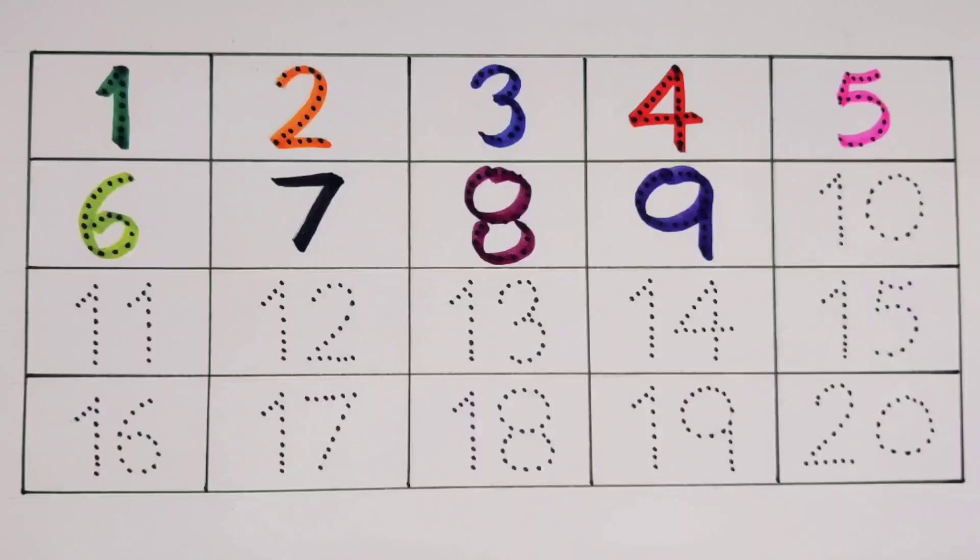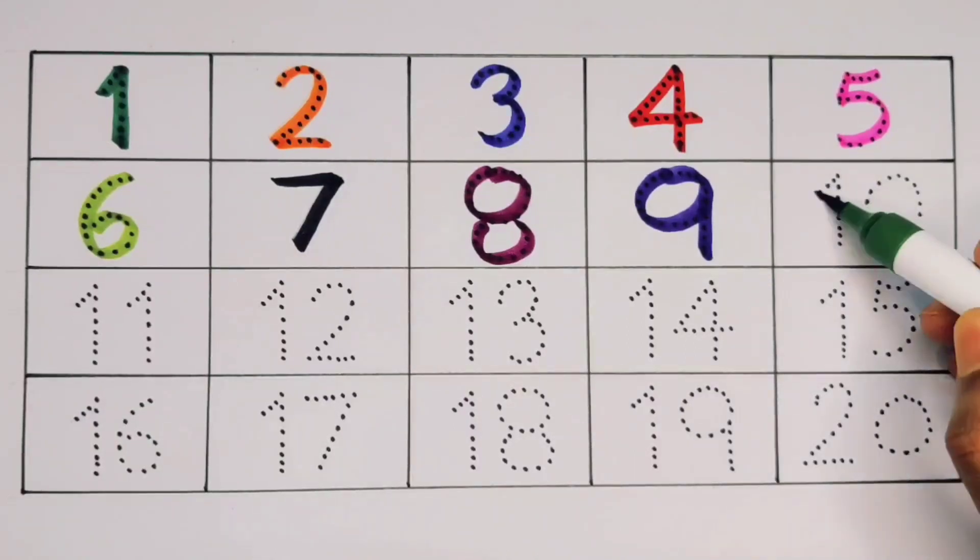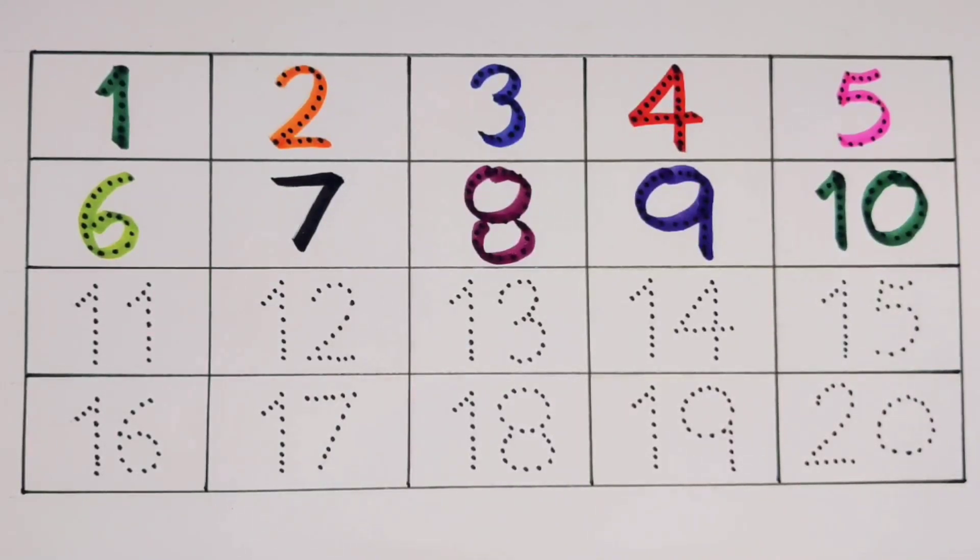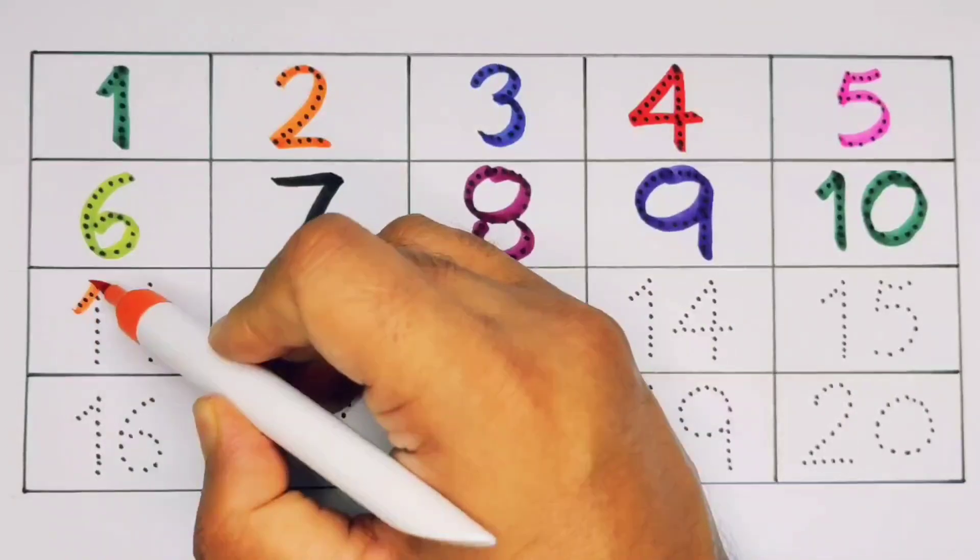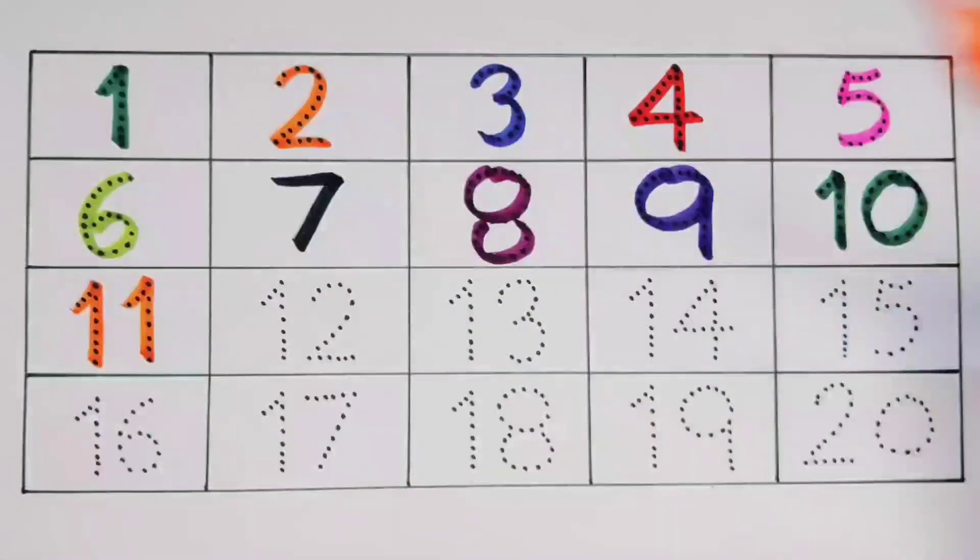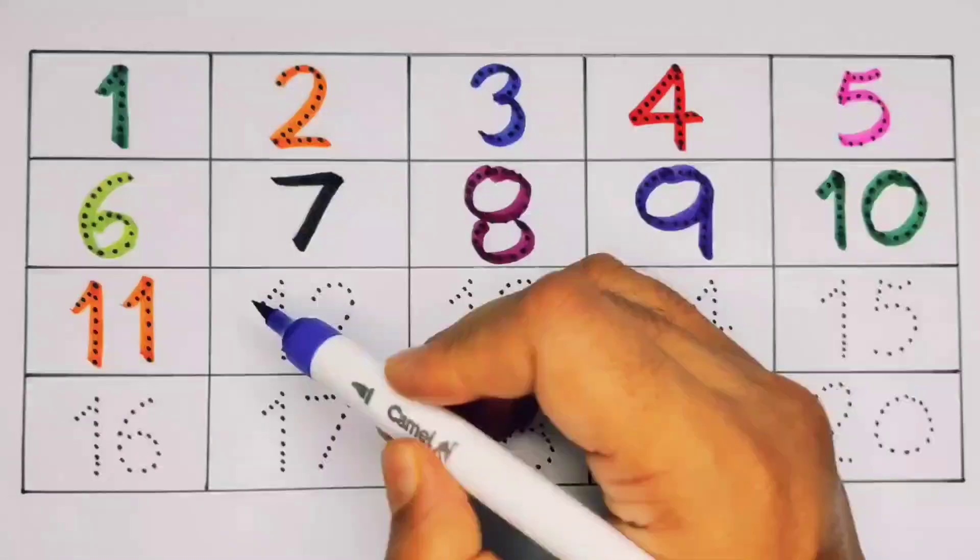Next kids, it's ten, one zero, ten, number ten. Next, eleven, one one, eleven, number eleven. What will next kids?